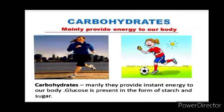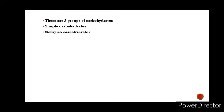Sugar and starch are the two important carbohydrates found in our food. Glucose is present in the form of starch and sugar. There are two groups of carbohydrates - simple carbohydrates and complex carbohydrates.